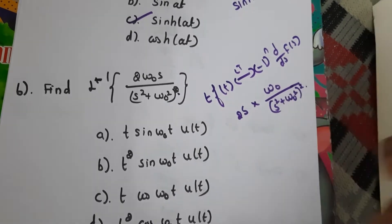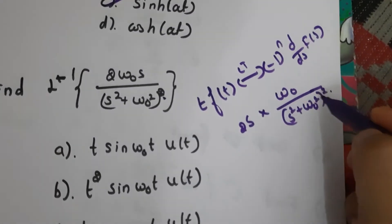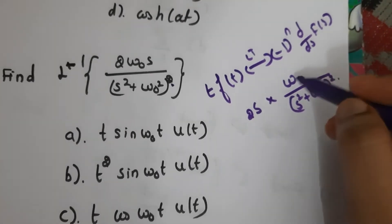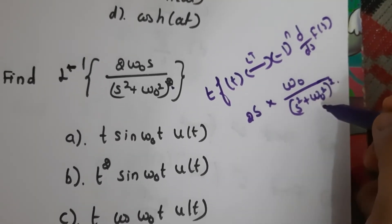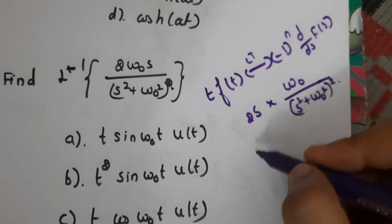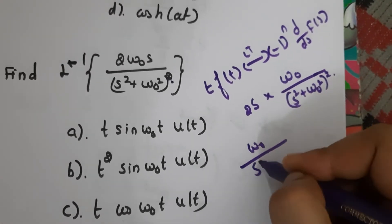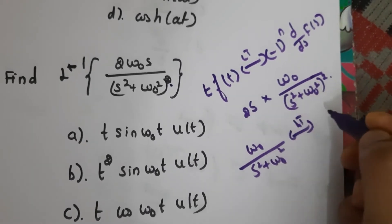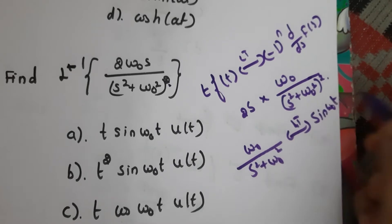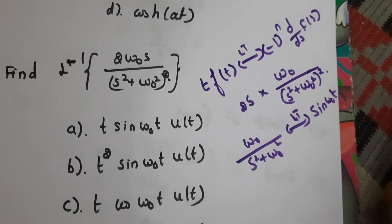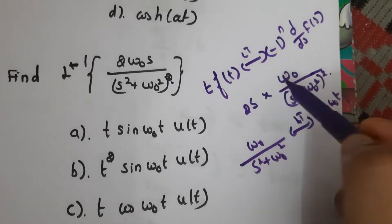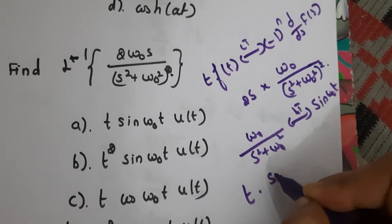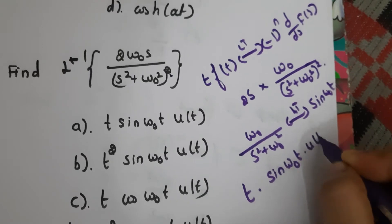Consider ω₀/(s² + ω₀²) without the square — this is the Laplace transform of sin(ω₀t). Using the differentiation property on F(s) = ω₀/(s² + ω₀²) and working through the chain rule, we ultimately find that the inverse Laplace of 2ω₀s/(s² + ω₀²)² is t·sin(ω₀t)·u(t).